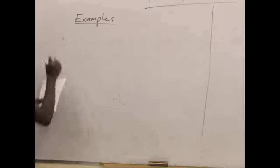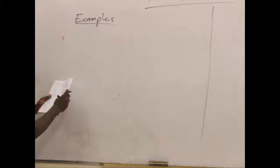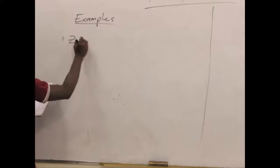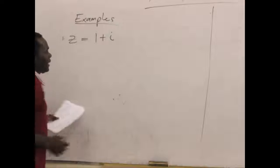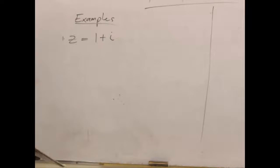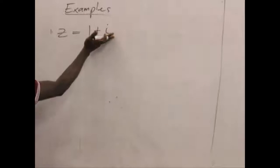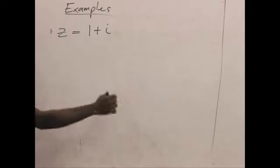For example, you will be given a complex number which is z equals 1 plus i. You have to change this into polar Euler form. How do we do that? From our previous lesson, we said anytime you have the rectangular form, you first draw a complex plane.